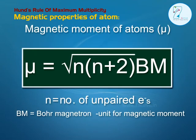Magnetic moment of atoms μ: μ equals square root of n(n+2) BM, where n equals number of unpaired electrons, BM equals Bohr magneton, unit for magnetic moment.